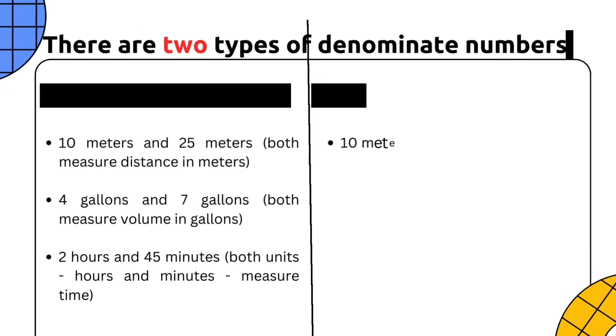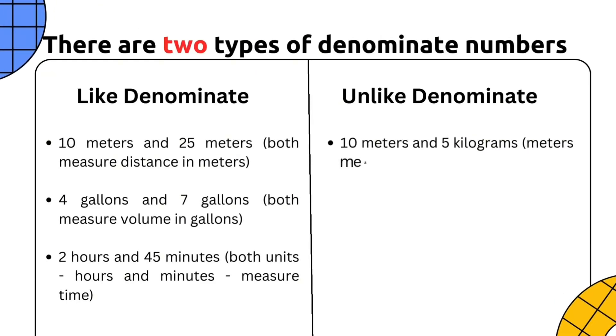Now an unlike denominate example, 10 meters and 5 kilograms, meters measure distance, and kilograms measure weight.